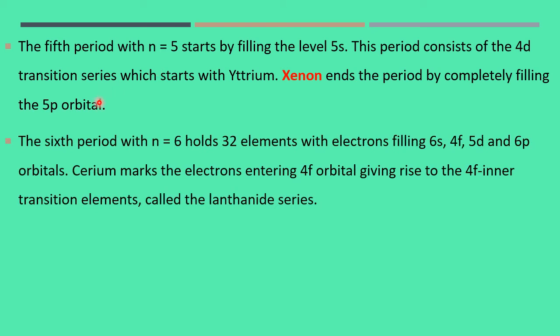The sixth period with N equal to 6 holds 32 elements with electrons filling 6s, 4f, 5d and 6p orbitals. The main important orbital is 4f. Here entry of 4f starts. This 4f will take 14, so 18 plus 14 together is 32. Cerium marks the electrons entering 4f orbital, giving rise to the 4f inner transition elements called the lanthanide series where the electron enters the 4f orbital.